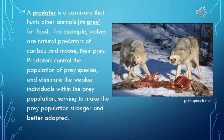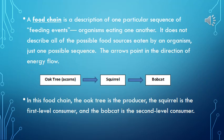A predator is a carnivore that hunts other animals — its prey — for food. For example, wolves are natural predators of caribou and moose, their prey. Predators control the population of prey species and eliminate the weaker individuals within the prey population, serving to make the prey population stronger and better adapted. A food chain is a description of one particular sequence of feeding events — organisms eating one another. It does not describe all possible food sources eaten by an organism, just one possible sequence.